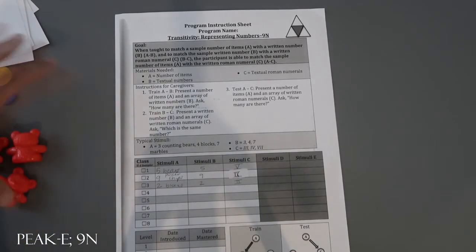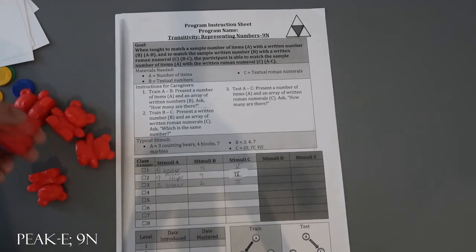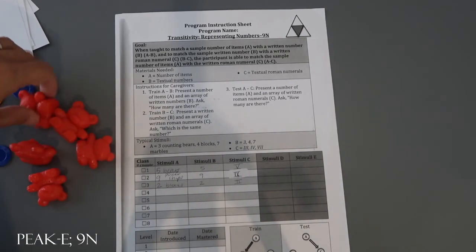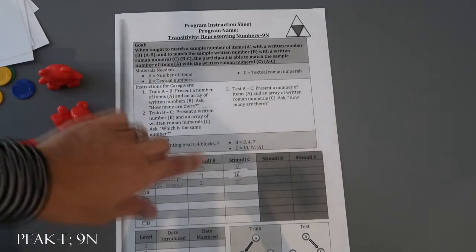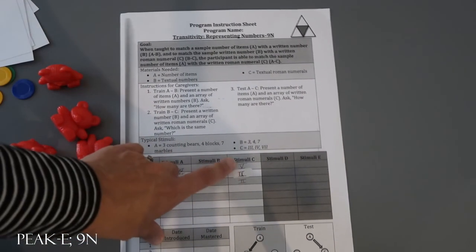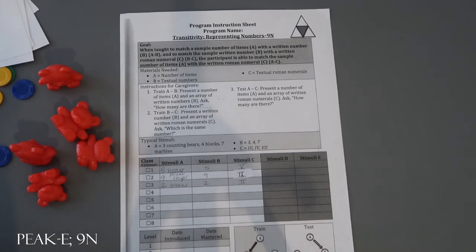This is just a material sample of items you might want to potentially use. You could use any object in various numbers, any number cards, and the roman numerals that correspond with that. This is just an example of what peak equivalence transitivity representing numbers 9N might look like.